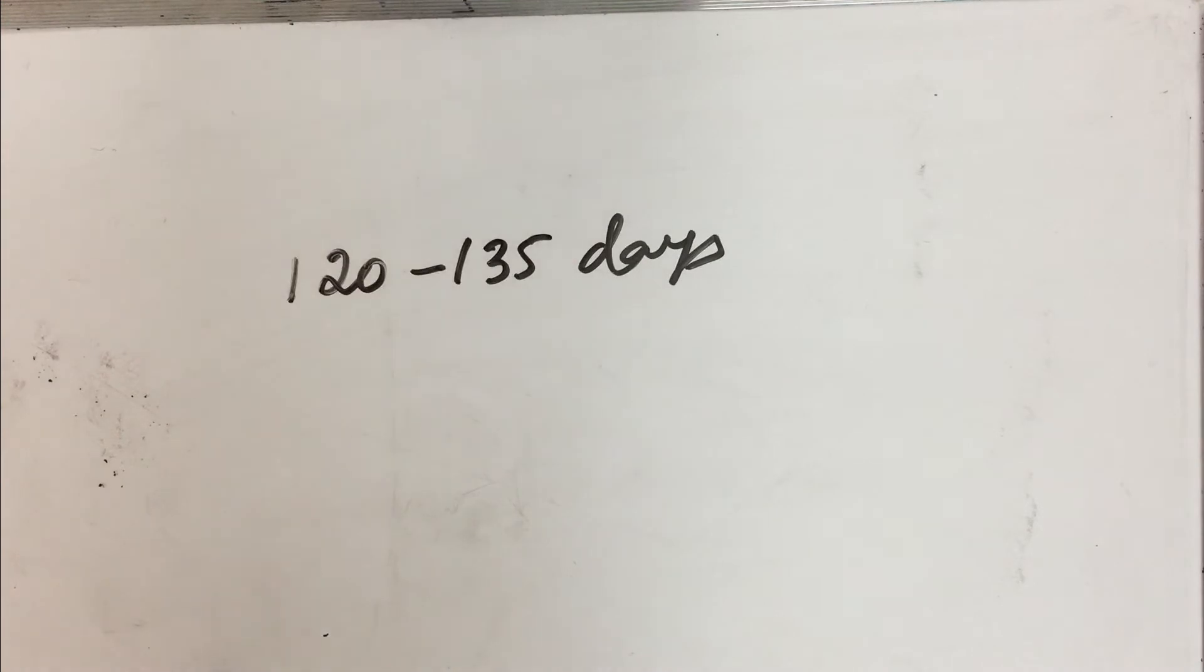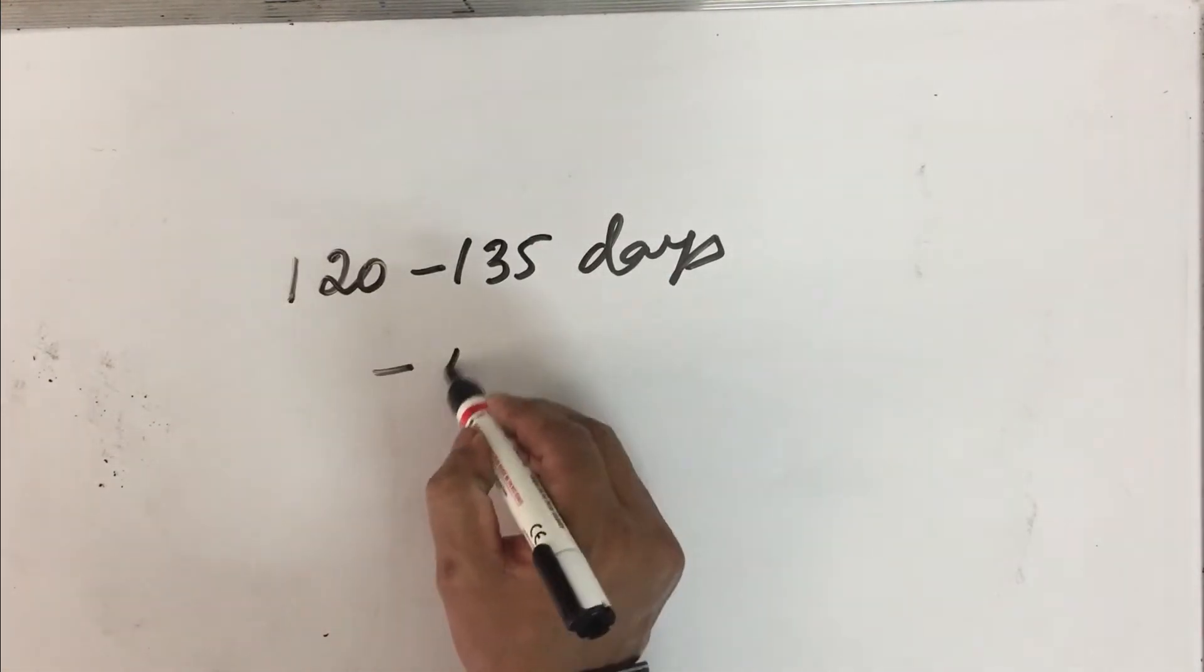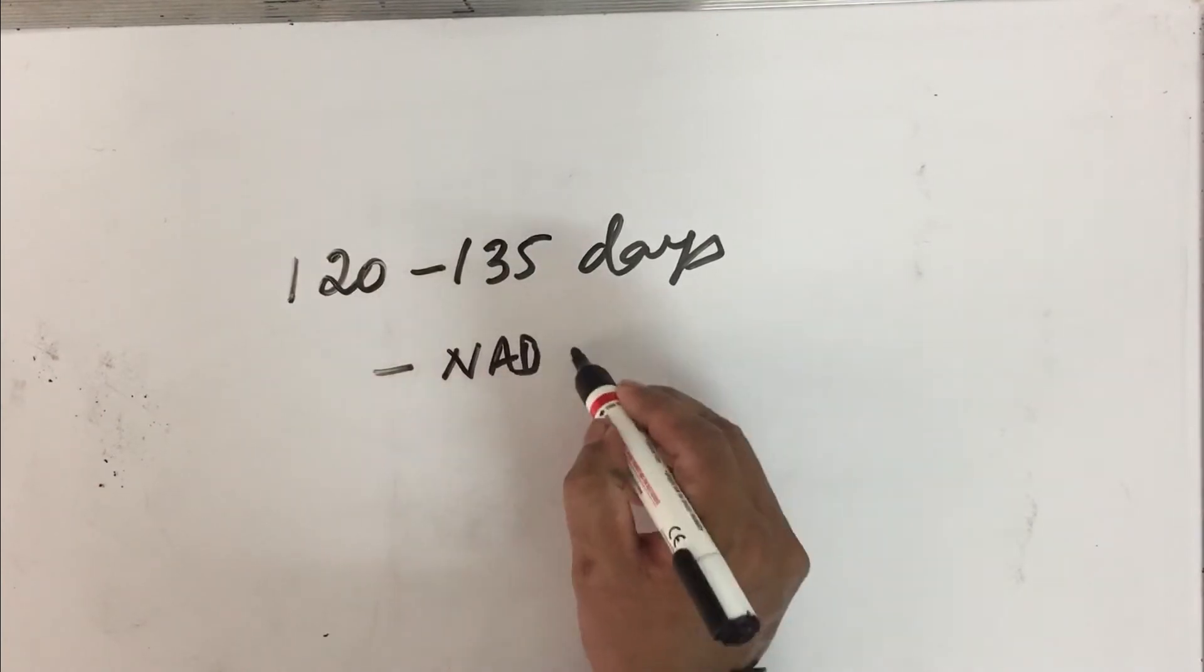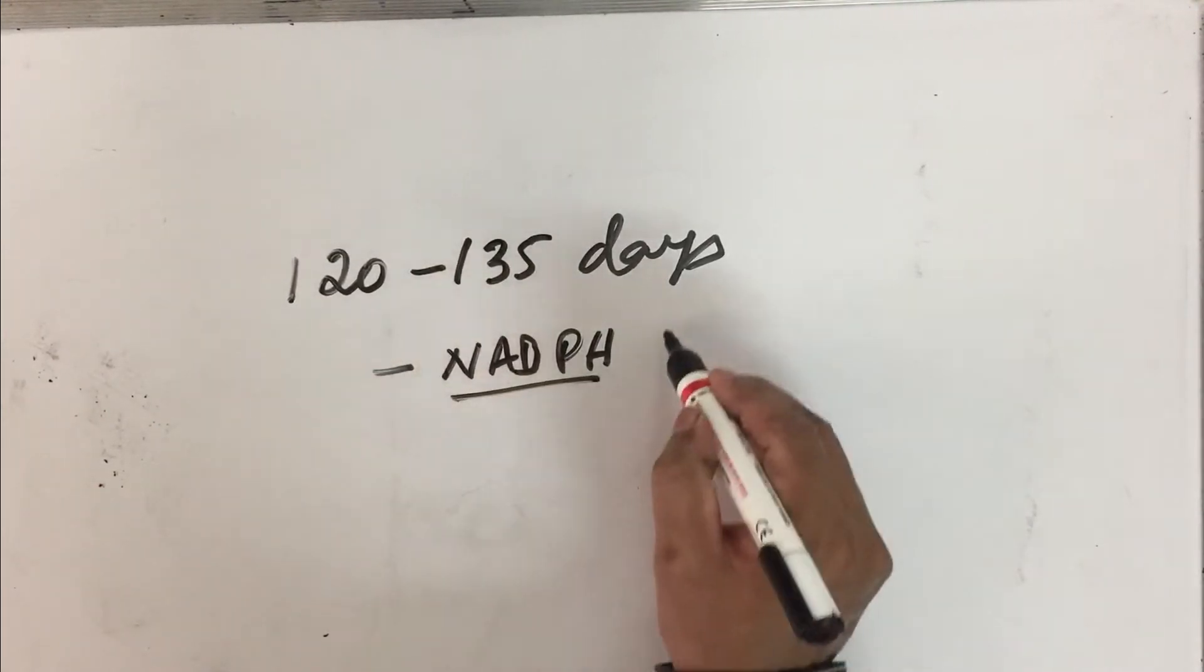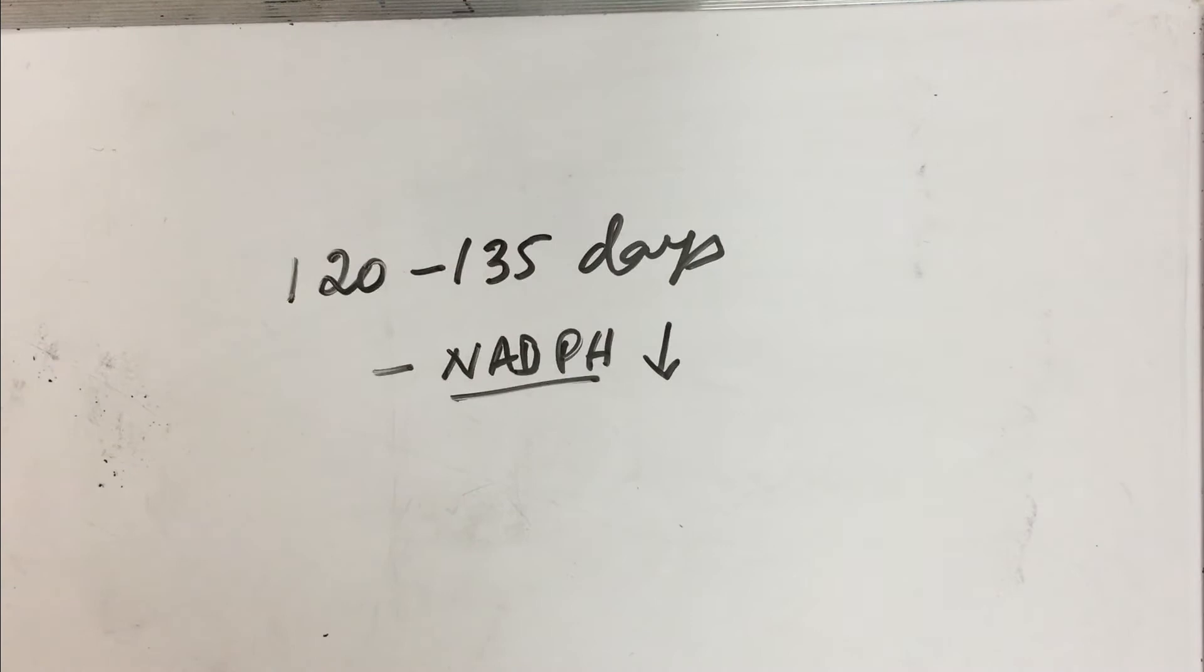In this case, many of these pathways are switched off. Especially if glucose-6-phosphate dehydrogenase is absent, then there is going to be a deficiency of NADPH also. This concentration will decrease, and we need this NADPH for maintaining cell integrity.